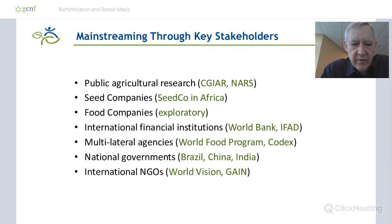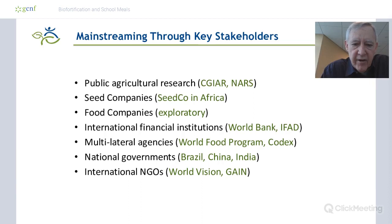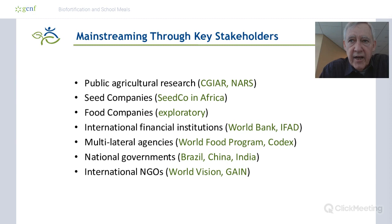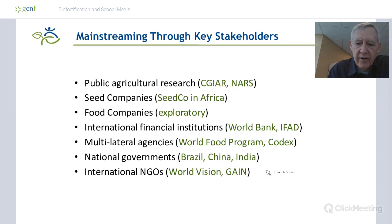We're mainstreaming biofortification through key stakeholders. We're getting public agricultural research and private seed companies to mainstream biofortified lines of crops. We're starting to talk to food companies about marketing biofortified varieties and using them as ingredients. The World Bank is now making loans to governments in Africa where part of the loan agreement is to provide funding for scale-up of biofortified crops. The national governments of Brazil, China, and India now have independently funded biofortification programs, and we're working with international NGOs to scale up.